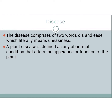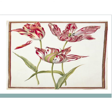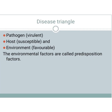Downy mildew, powdery mildew, rust, wilt, smut etc. are some examples of plant disease, which we will see in further videos. If you are studying plant pathology, you must know about broken tulips. Broken tulips is a beneficial viral disease. In Holland, due to viral infection, the broken tulips disease occurred, causing those flowers to get a high market price because of their beauty — you can see in this picture how beautiful the broken tulips are.